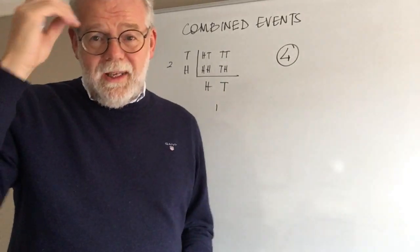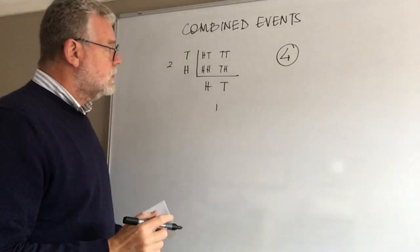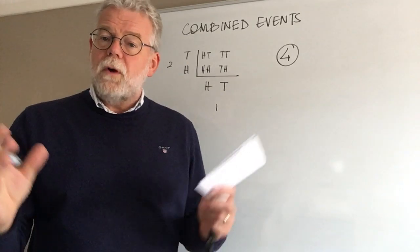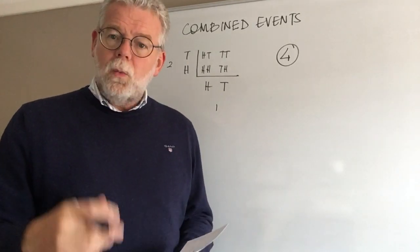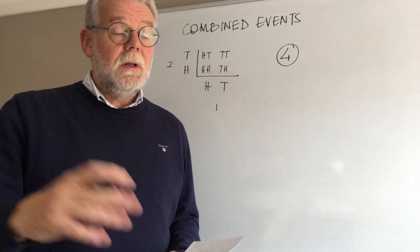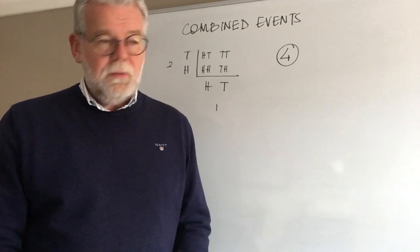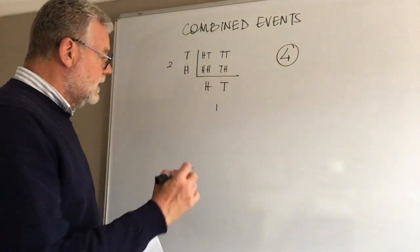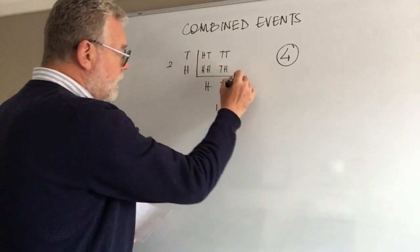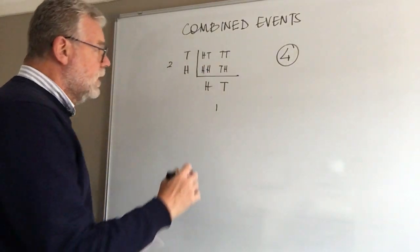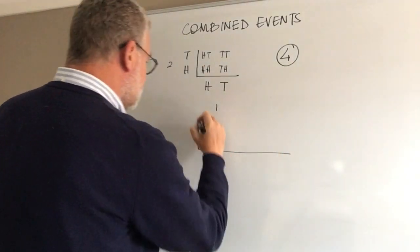Now where it gets a bit trickier is when we've got three coins. What are the outcomes if we've got three coins? It's a bit tricky because we've only got two axes that we can use. What I tend to do is this.